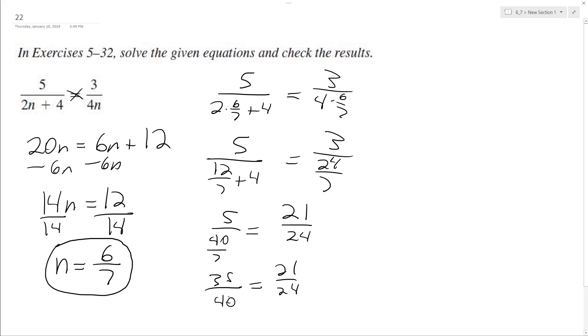If I divide through by 7 on both of these, I end up with 5 over... not 7.